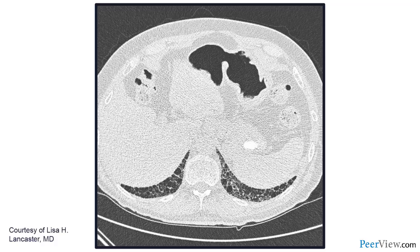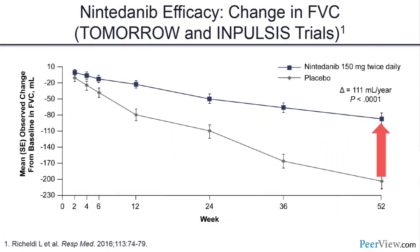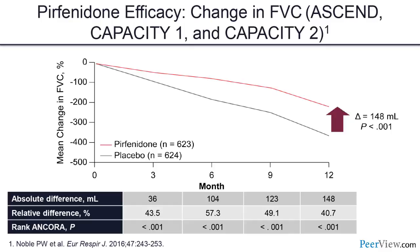Joe's CT shows bronchiectasis and honeycomb change extending to the dependent side. Looking at the data for nintedanib and pirfenidone: both medications show a continued decline, but they slow the rate of decline by about 50 percent. It's wonderful in pulmonary fibrosis to now have two choices. For nintedanib the delta between placebo and treatment was 111 mL per year; for pirfenidone the delta was 148 mL over 12 months.